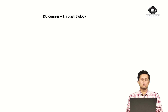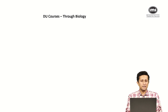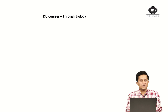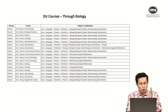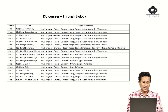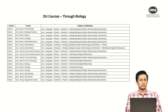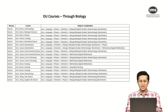Let us look at the first combination — what are the courses that you get if you are a bio student? You may or may not have studied mathematics, but you definitely have taken biology. Here, if you see, you get access to a lot of BSc honors programs, most of which have their foundation in biology: anthropology, biological sciences, botany, zoology — all of these.